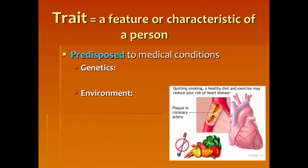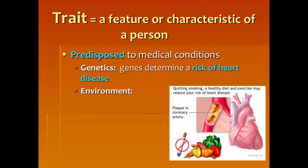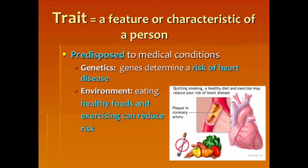Being predisposed to medical conditions: genes can determine the risk of heart disease and being a hemophiliac. However, the environment — things that you eat, whether you're eating healthy foods, whether you're exercising, whether you're smoking — these are things that can affect your disease.